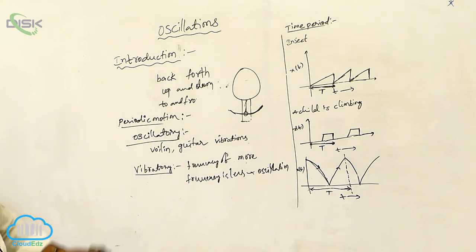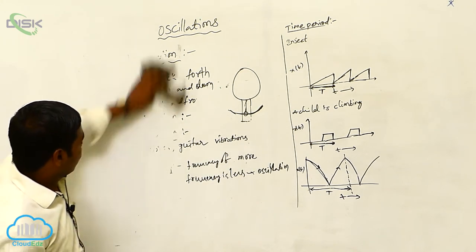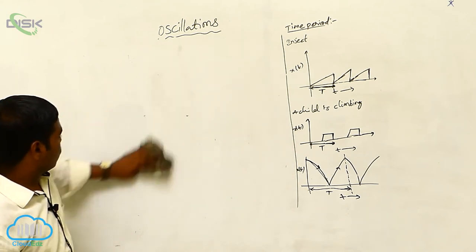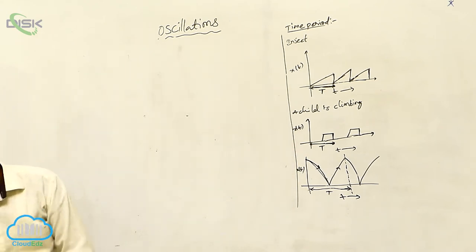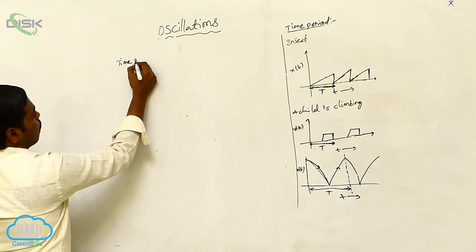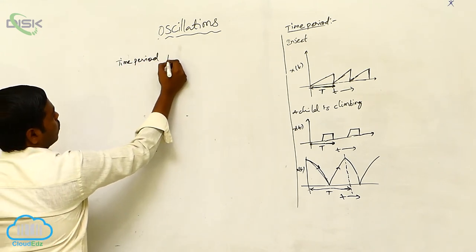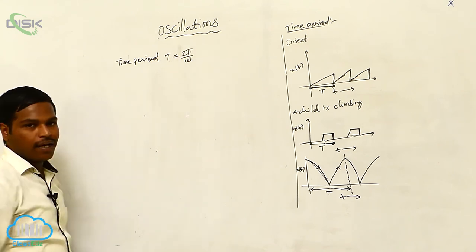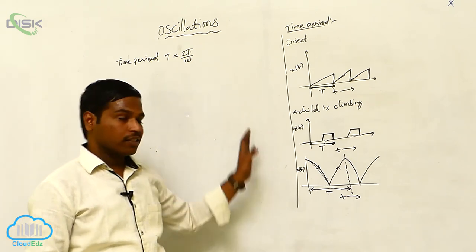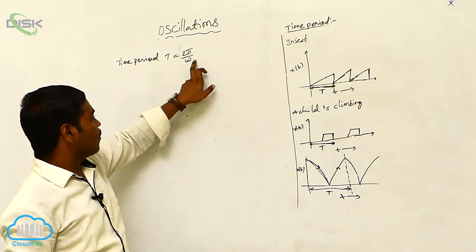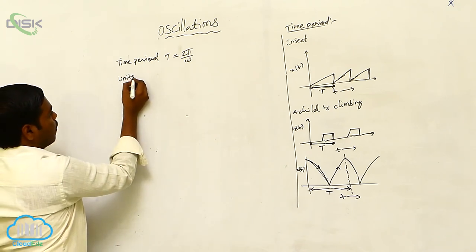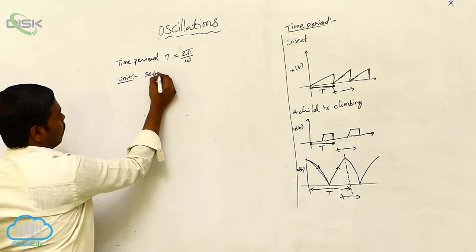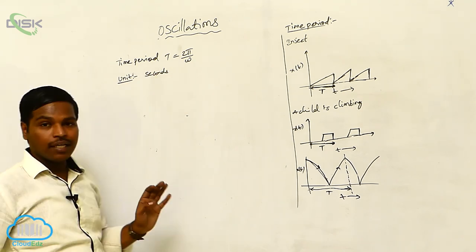The formula for time period is: T = 2π / ω, where ω (omega) is called the angular frequency. The unit for time period is seconds.